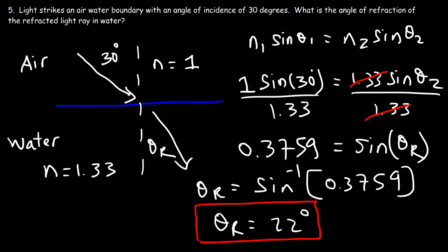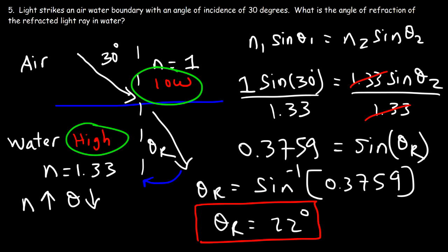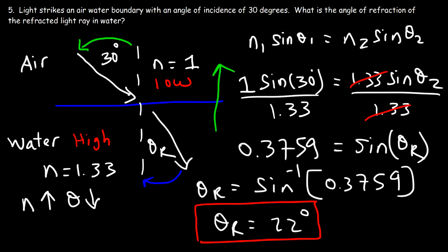Notice what happens as light travels from a material with a low index of refraction to a material with a high index of refraction. The angle of refraction is 22 degrees, so the light ray moved closer to the normal line. Anytime light travels from a low to a high index of refraction, it bends closer to the normal line. Conversely, if it moves from a high to a low index of refraction, the angle increases and the light ray bends away from the normal line.